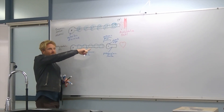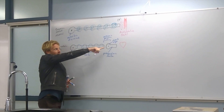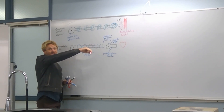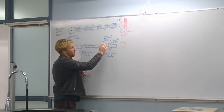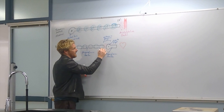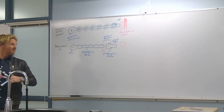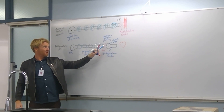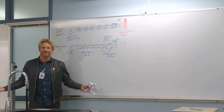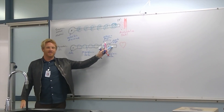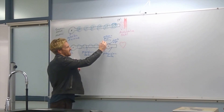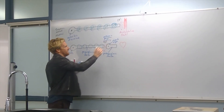When the preganglionic neuron fires, it sends an action potential to the postganglionic neuron. When the action potential reaches the axon terminal, it releases acetylcholine onto the postganglionic neuron. Does that acetylcholine stimulate or inhibit the postganglionic neuron? It stimulates it — when the action potential reaches the end, you want the next neuron to fire.